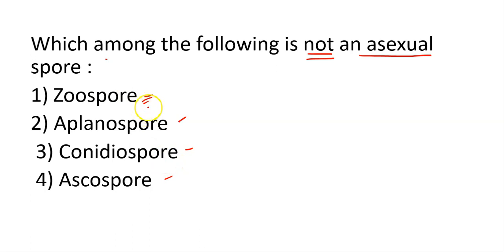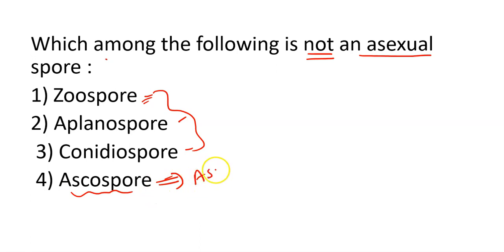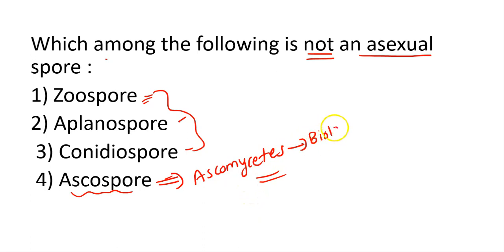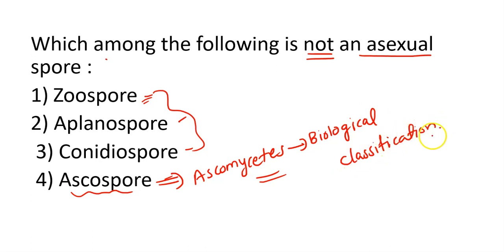Zoospore, aplanospore, and conidiospore are asexual spores. Ascospore is a sexual spore — ascospore is a sexual spore found in Ascomycetes. In the process of sexual reproduction, the ascospore is produced endogenously.